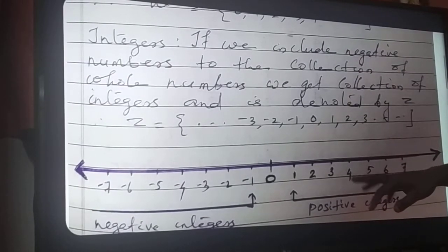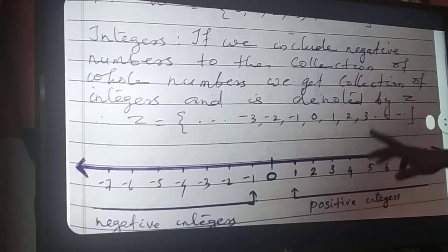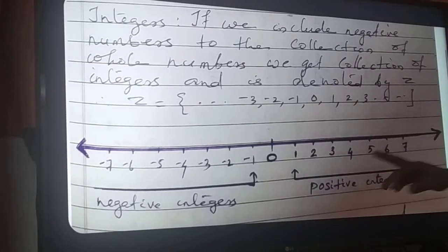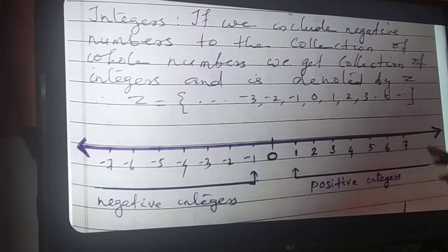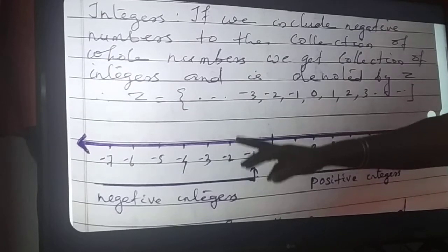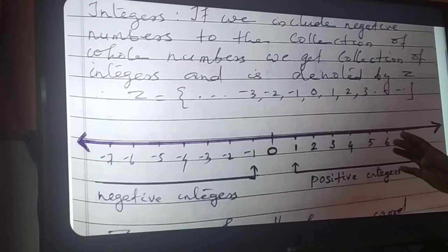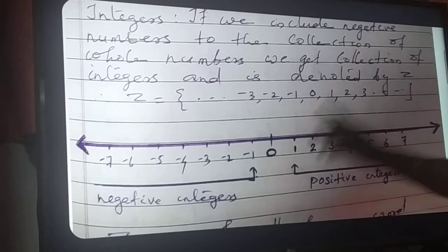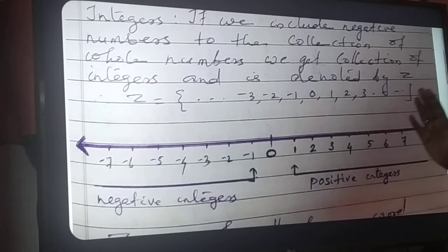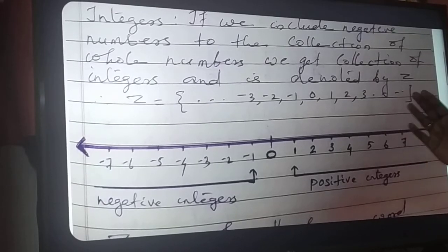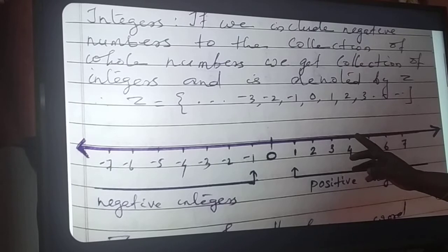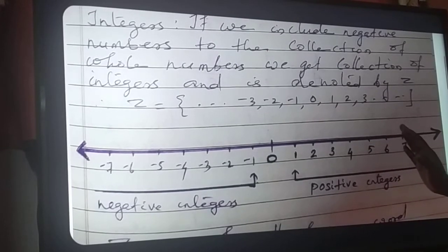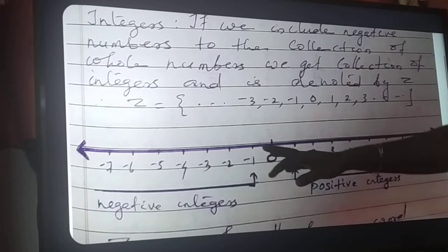I have drawn a number line here. I marked 0 here. On the right side, I have marked positive numbers: 1, 2, 3, 4, 6, 7, etc. On the left side, I have marked negative numbers: minus 1, minus 2, minus 3, minus 4, etc. Here 0 is less than 1, 1 is less than 2, 3 is less than 4. Therefore, when numbers go to the left side of the number line, the value is decreasing.